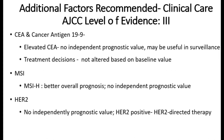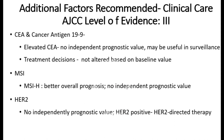Additional factors recommended in AJCC with evidence level 3 include CEA and carbohydrate antigen 19-9, CA 19-9. Elevated CA 19-9 has no independent prognostic value but may be useful in surveillance — if tumor marker levels are rising in the postoperative period, it is a signal for recurrence. However, treatment decisions are not affected by preoperative tumor markers.